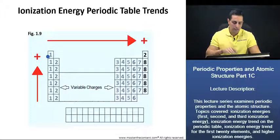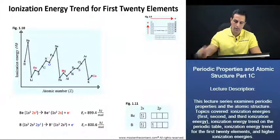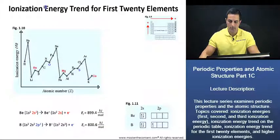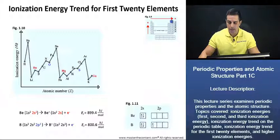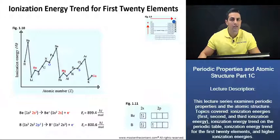Let's delve a little bit deeper now and take a look at figure 1.10. On the previous slide, we had just stated that the ionization energy increases to the right going across a row. So one irregularity in that trend, we can actually see.